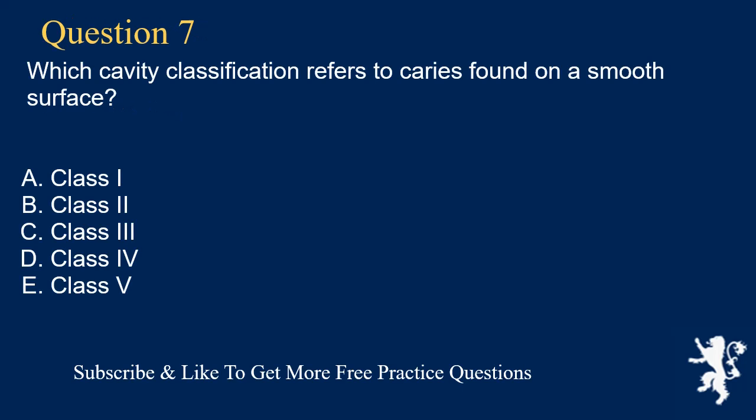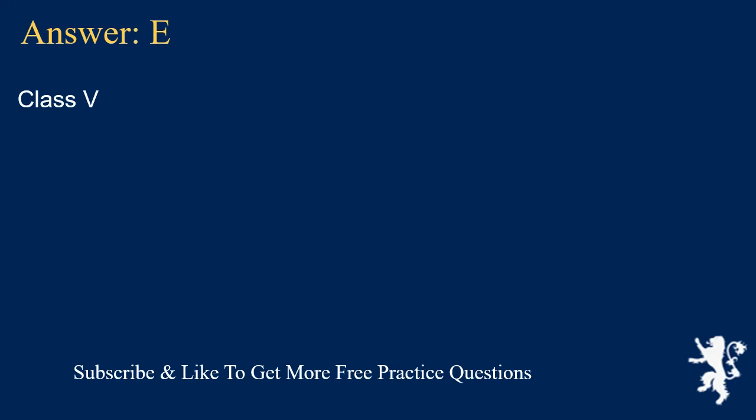Question 7. Which cavity classification refers to caries found on a smooth surface? a. Class I, b. Class II, c. Class III, d. Class IV, e. Class V. Answer: E. Class V.